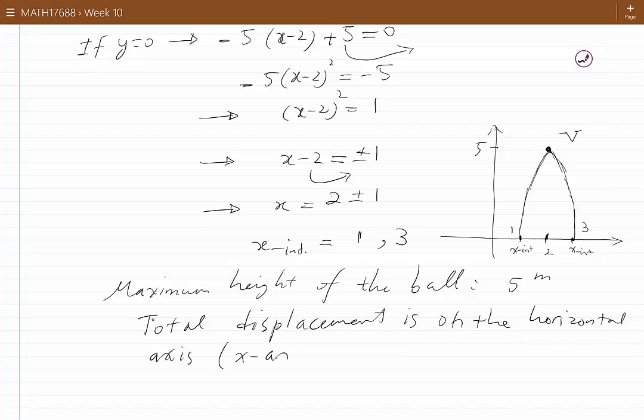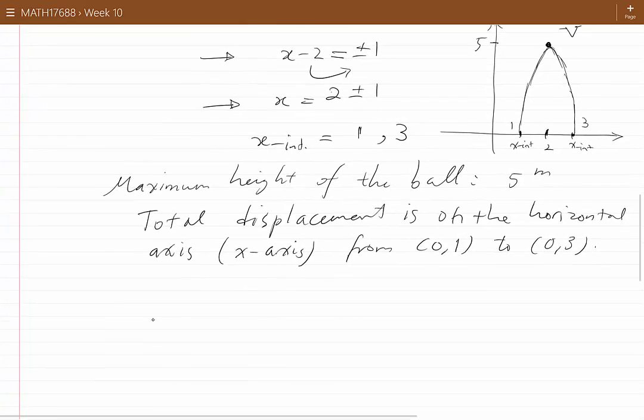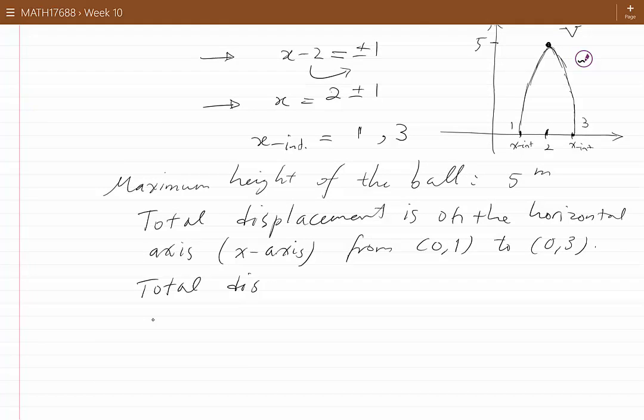is on the horizontal axis, x-axis. And it is from 0 and 1 to 0 and 3. Or in other words, the total displacement is 2 meters in the positive x-direction.